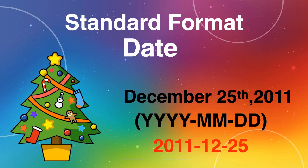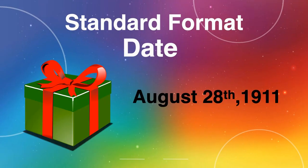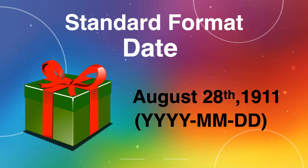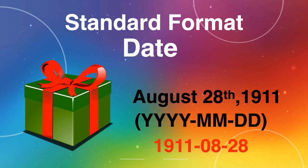Let's look at this example: August 28th, 1911. Again, using the SI format, we write the year, then the month, then the day. So boys and girls, what is this date in SI, or standard format? That's right, boys and girls — our answer should look like this: the year should be 1911, the month should be the 8th month to represent August, and 28th should be the date.